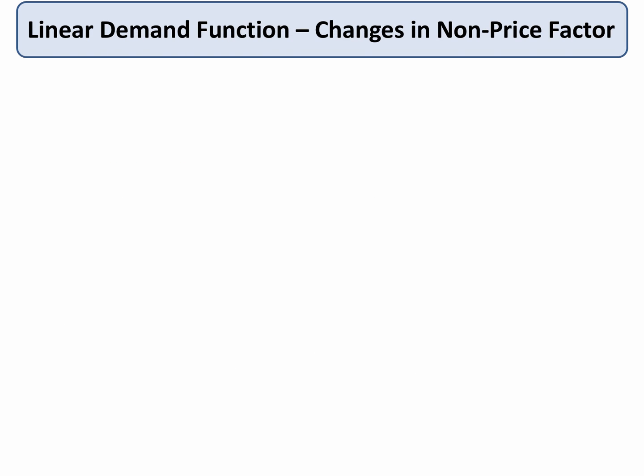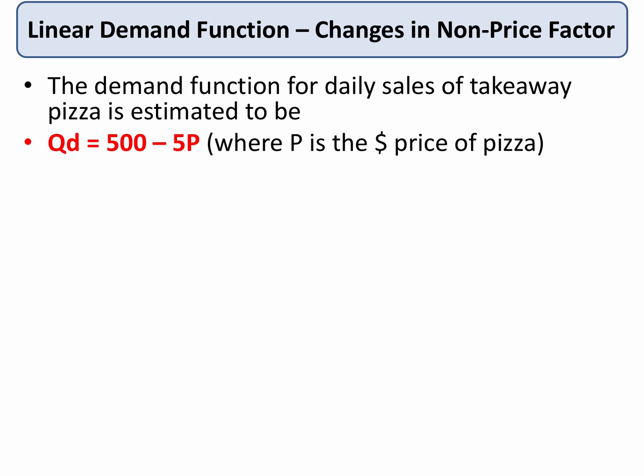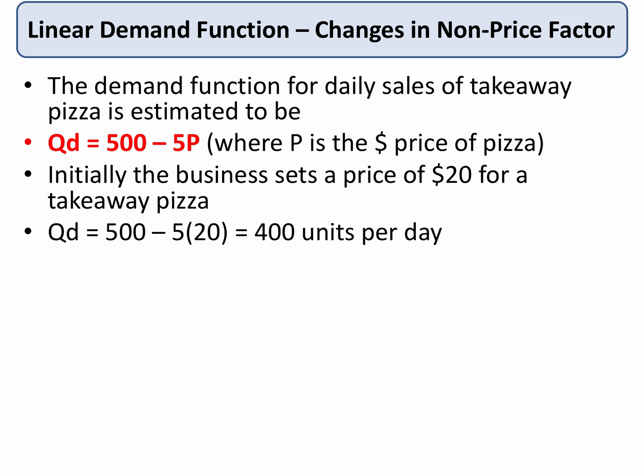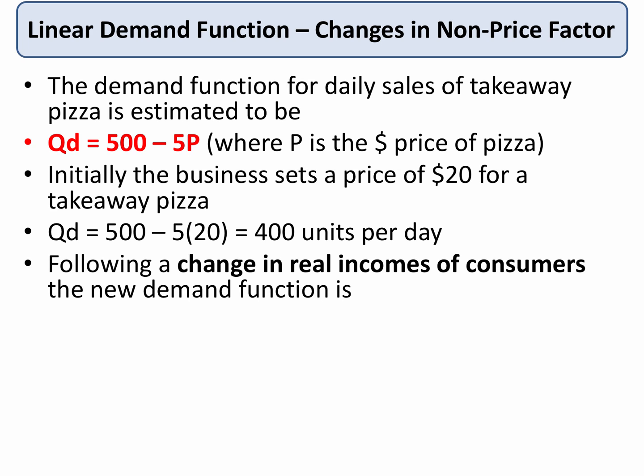We can also use linear demand functions to show the effect of a change in a non-price factor. Going back to our original demand function for pizza — quantity demanded equals 500 minus 5P — at $20, people are buying 400 units per day as before. Now we're going to increase the real income of consumers, perhaps through a tax cut or an increase in wages. As a result, the new demand function becomes 800 minus 5 times the price.